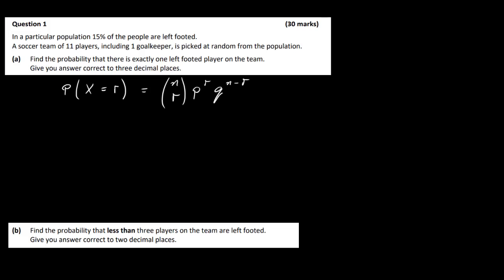Remember there are four conditions for a Bernoulli trial. There should be a finite number of trials — in this question we have 11 players, a soccer team of 11 players including one goalkeeper. There should be only two outcomes: success and failure. In this question we need to find the probability of exactly one left-footed player, so a player can be left-footed or right-footed.